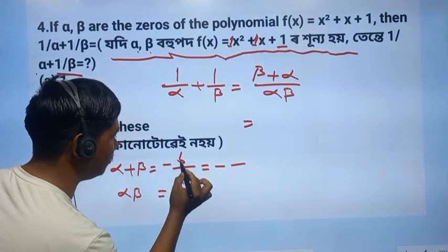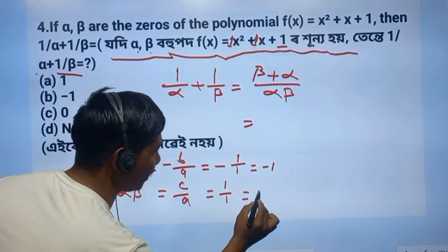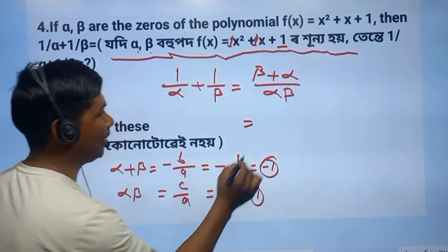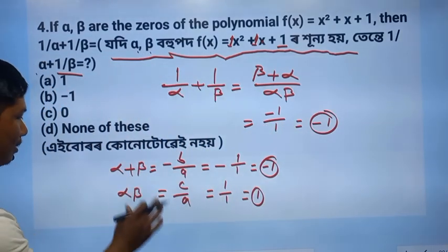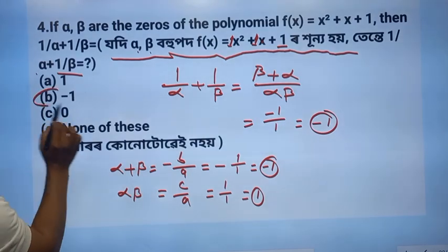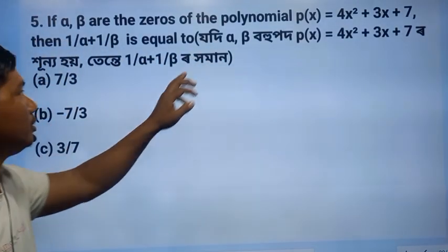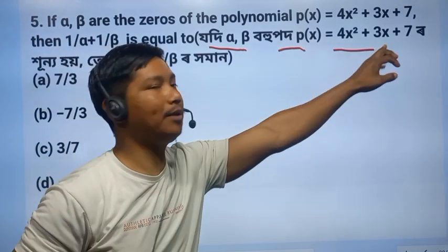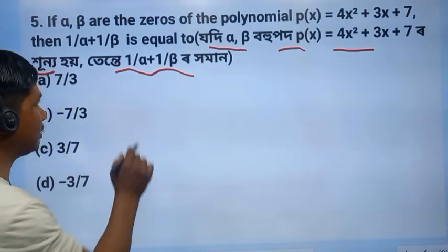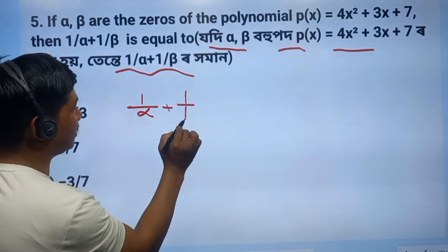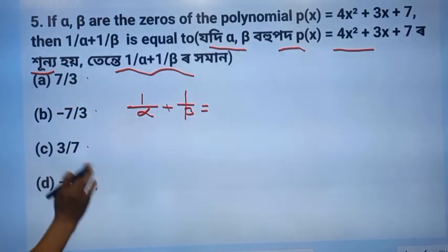Minus b by a: b is 1, a is 1, so minus 1. And 1 by alpha plus 1 by beta — combining them as (alpha plus beta) over (alpha times beta) — this gives minus 1. So the answer option is minus 1.